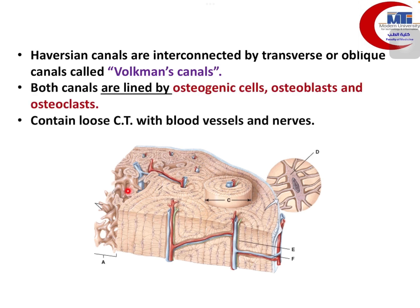The endostium lines the medullary cavities of the bone and also the Haversian canals and Volkmann's canals — any lining from the inside is by the endostium layer. It is formed of osteogenic cells, osteoblasts, and osteoclasts, which are bone resorbing cells. This makes the endostium an important layer for the continuous dynamic remodeling of bone tissue, where osteoclasts can resorb broken, worn out, or old bone tissue.